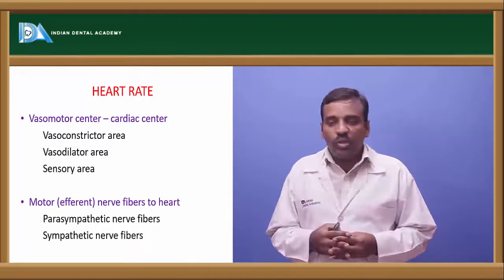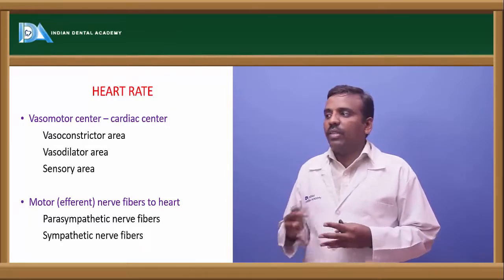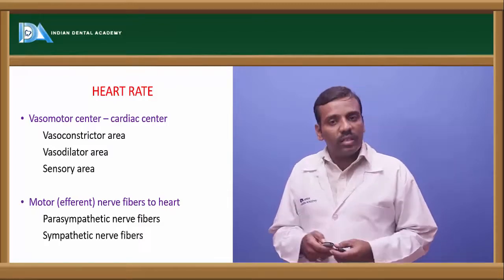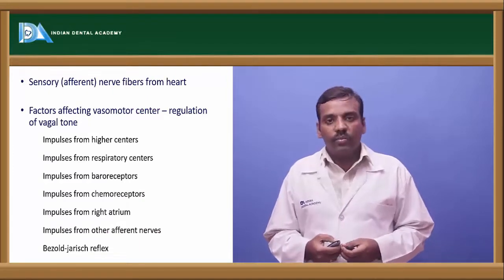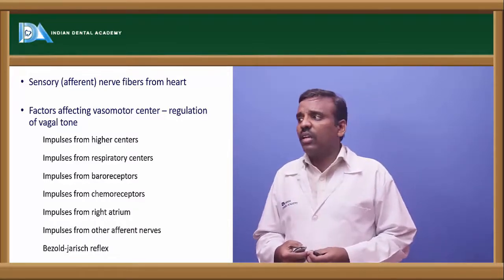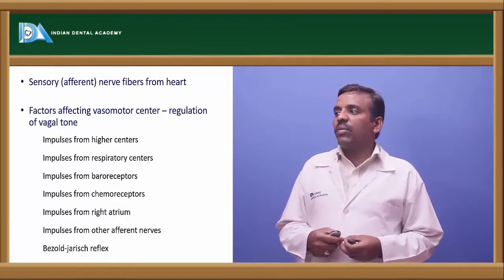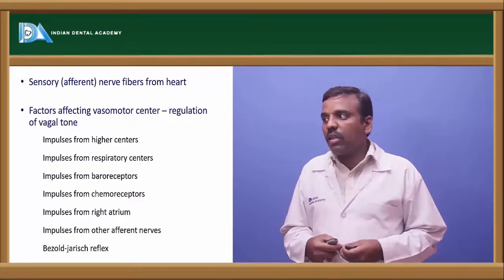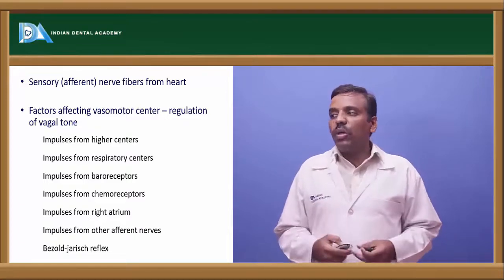The vasomotor centers include a vasoconstrictor area, vasodilator area, and sensory area. Motor nerve fibers include parasympathetic and sympathetic nerve fibers, plus sensory nerve fibers from the heart. Factors affecting vasomotor centers include impulses from higher centers, respiratory centers, baroreceptors, chemoreceptors, the right atrium, other efferent nerves, and the Bezold-Jarisch reflex.